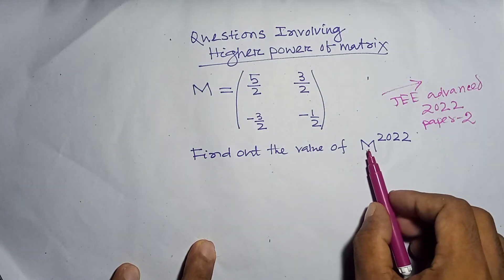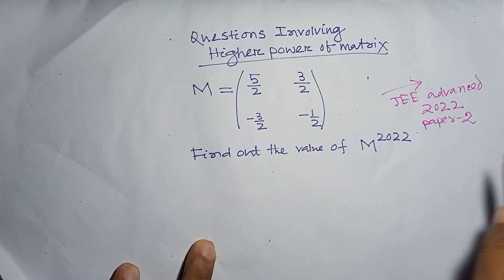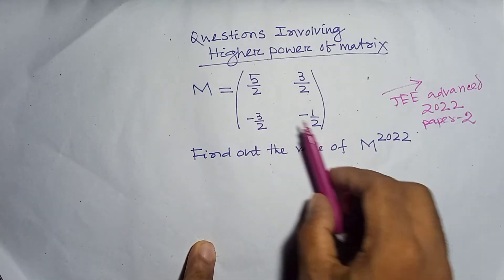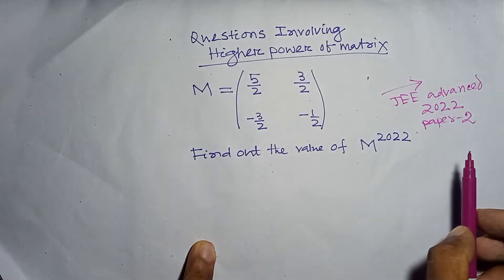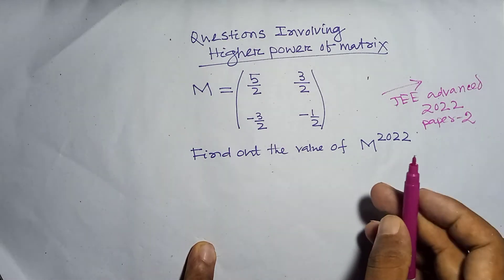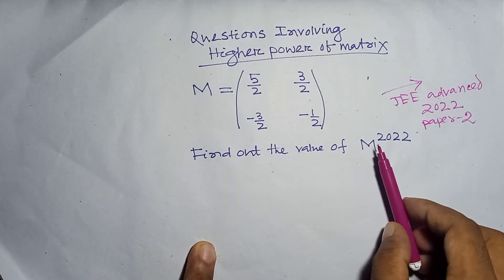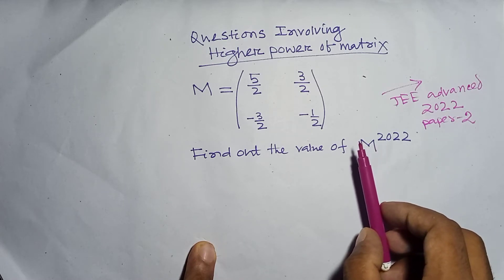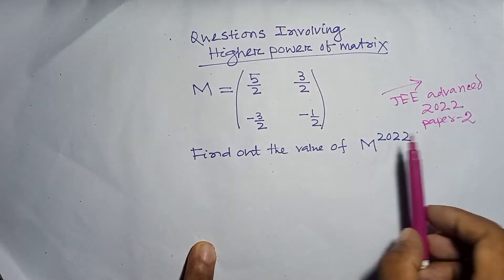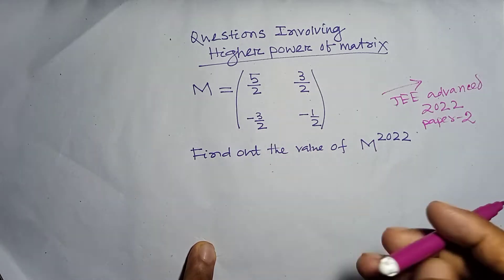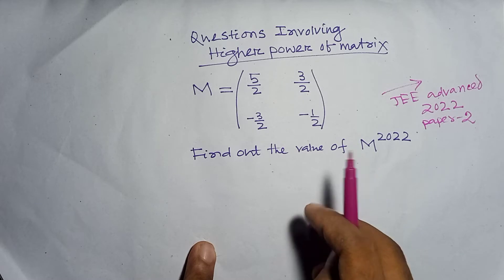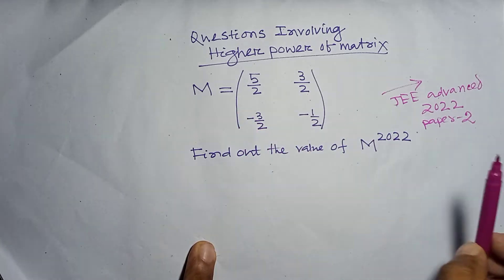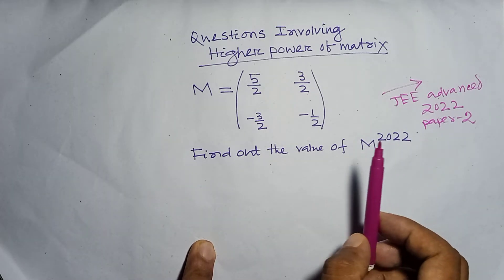So how do we find M to the power 2022? Do we multiply this matrix 2022 times? We could, but it would take too much time, so that is not the correct way. There is a trick to solve this kind of question involving higher powers of a matrix.